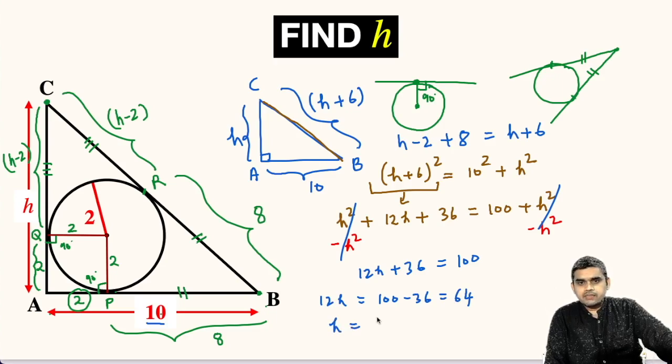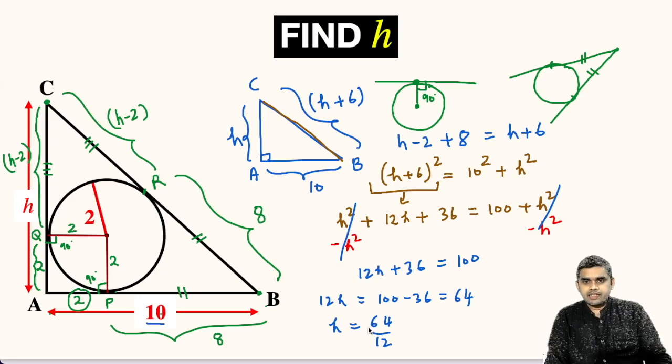So h will be 64 divided by 12. Let us simplify this. We can cancel the numerator and denominator by 4.